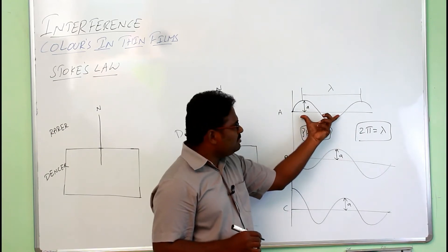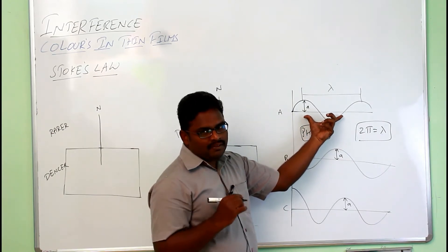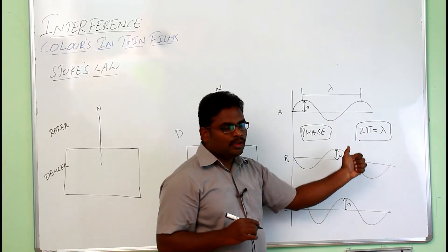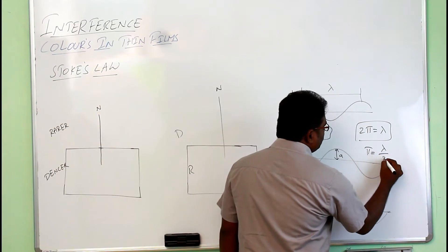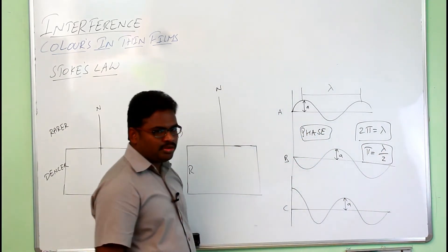Then this portion can be considered as the wavelength. Wavelength can be written as 2 pi, or pi equals lambda by 2. These are the two things that we are supposed to remember.